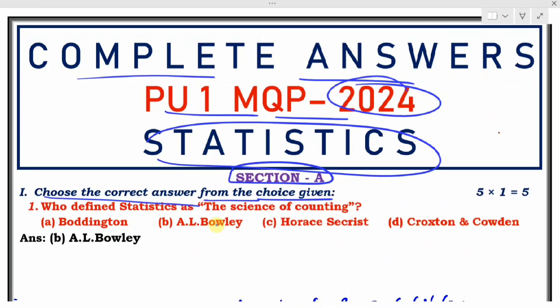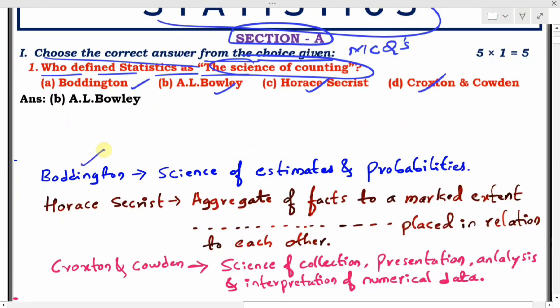First question: Who defined statistics as 'science of counting'? The options are Boddington, A.L. Bowley, Horace Secrist, and Croxton & Cowden. We already know how Boddington has defined statistics - it is 'science of estimates and probabilities'.